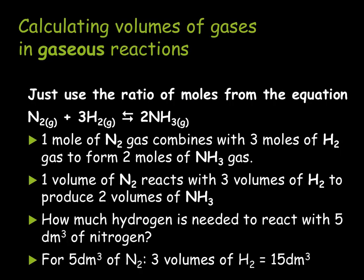When we are calculating volumes of gases in a gaseous reaction we don't even need to convert moles and masses. We can just use the volumes. So here we have the reaction for the Haber cycle which we will look at more in the next video. N2 gas plus 3H2 gas goes to 2NH3 gas. This is ammonia gas being formed. 1 mole of nitrogen gas combines with 3 moles of hydrogen gas to form 2 moles of ammonia gas. We can see this from the equation where we have no number before the nitrogen, a 3 before the hydrogen, and a 2 before the ammonia.